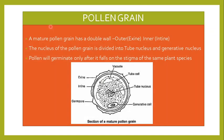Now we come to the male part, that is the pollen grain. A mature pollen grain has a double wall. The outer wall is known as the exine, and the inner wall is known as the intine. The nucleus of the pollen grain is divided into the tube nucleus and the generative nucleus. The tube nucleus ultimately develops into the pollen tube, and the generative nucleus will later become the male gamete.